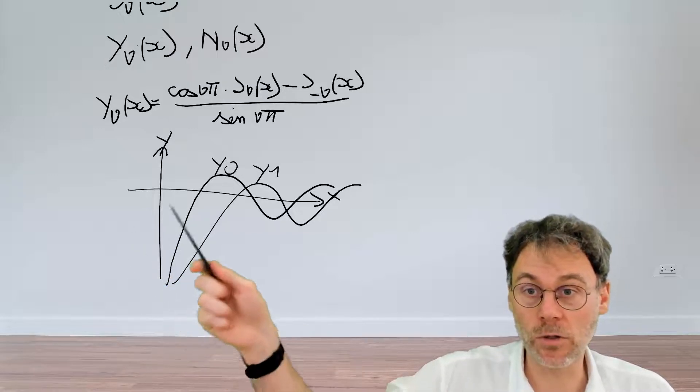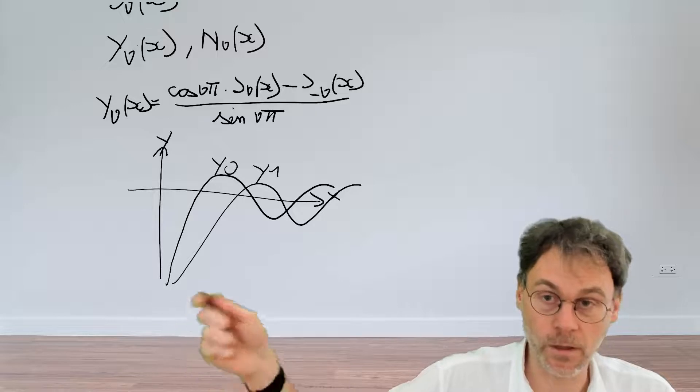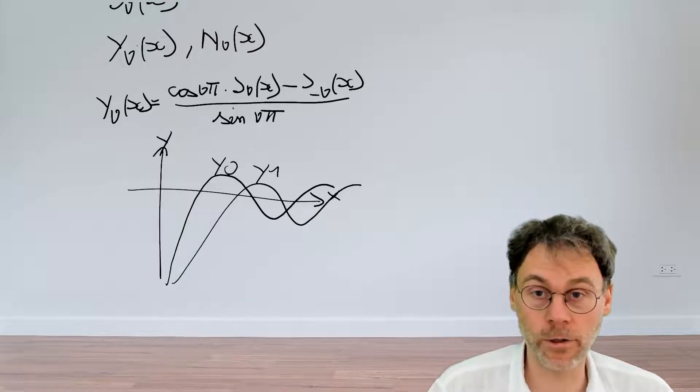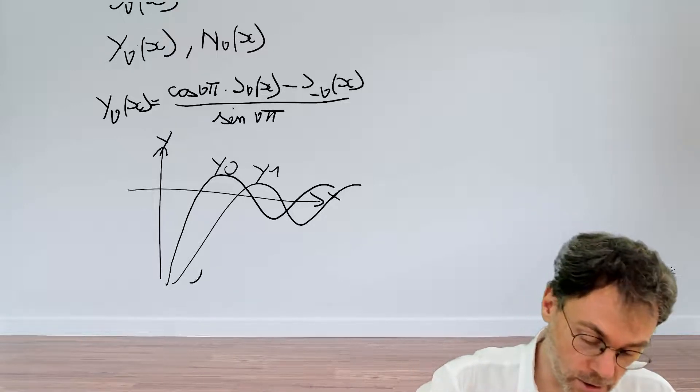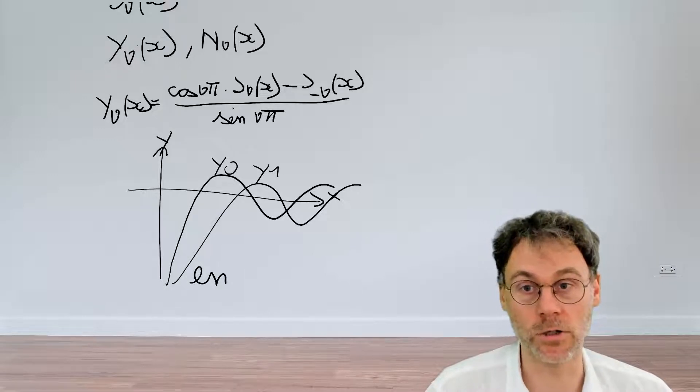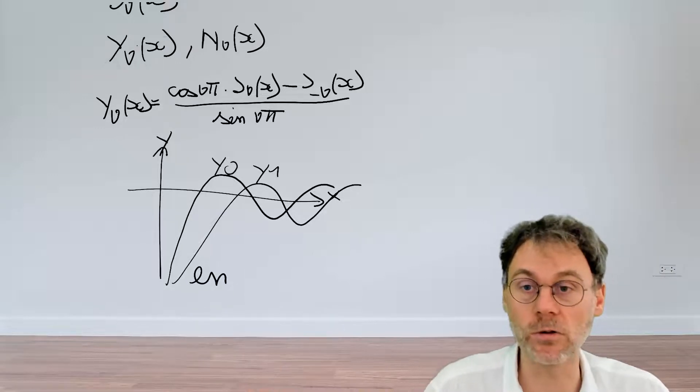And a very interesting feature is also what happens at the origin. There the function blows up, but in a very gentle way. This is a logarithmic type singularity there at the origin. So that's also good to know that this feature is there.